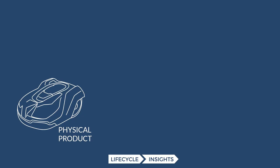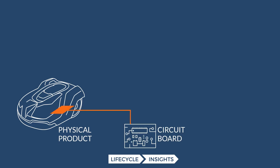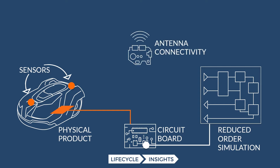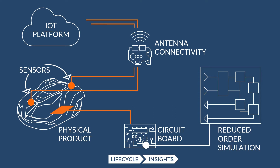How does it actually run? You have your physical product once it's assembled. On that, you have some electronics that are probably doing lots of things. One of the things it does is this reduced order simulation actually goes on that set of electronics — the board system you have running there. You have a number of physical sensors integrated into the design of the product, and also an antenna integrated into the design. And of course, you have your IoT platform.